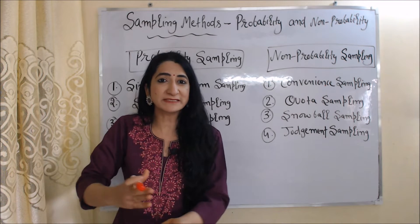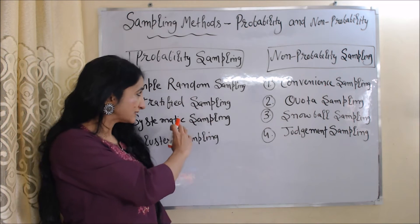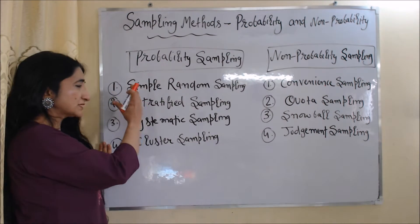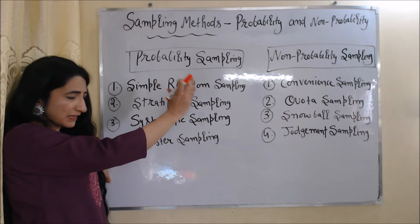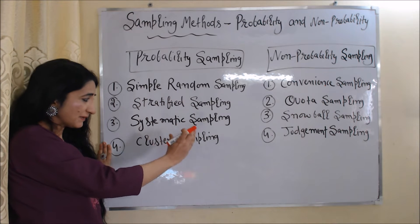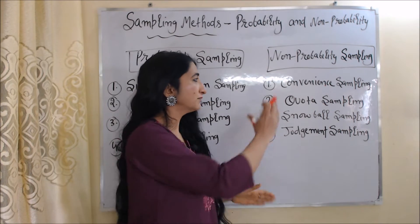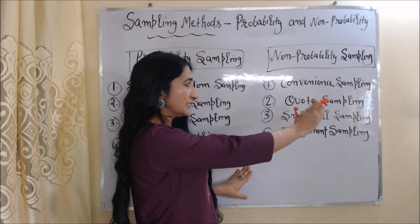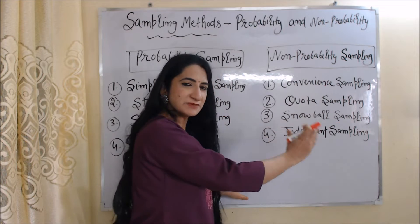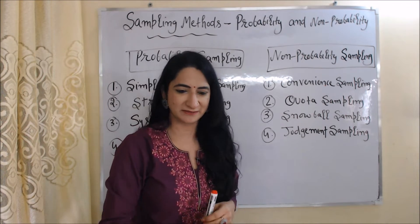Methods of sampling are basically divided into two parts: probability sampling and non-probability sampling. Probability sampling includes simple random sampling, stratified sampling, systematic sampling, and cluster sampling. Non-probability sampling includes convenient sampling, quota sampling, snowball sampling, and judgment sampling. One by one we will discuss each type.